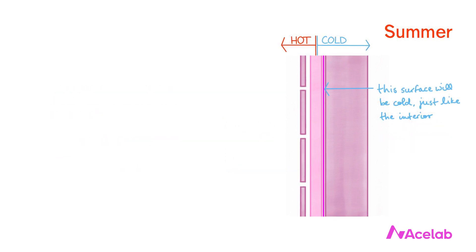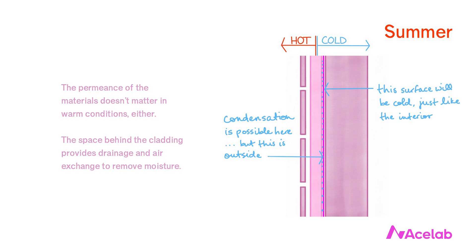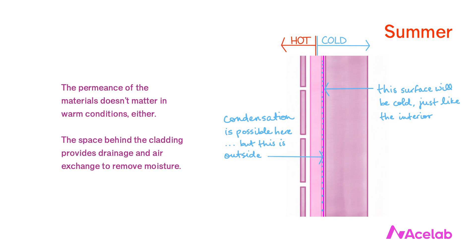In summertime, it will be warm outside and cool inside. Everything to the exterior of the insulation will be warm, and everything to the interior will be cool. We've located our water and air control layers on the interior of the insulation, which means those control layers will be cool — a cold surface. Warm, moisture-laden exterior air can reach that cold surface, but notice where the surface is: it's on the outside of the structure and control layers, where it can safely drain away or evaporate.